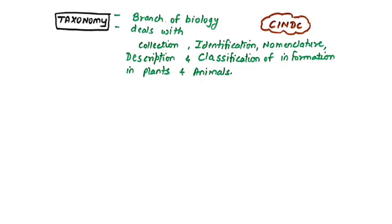Taxonomy is a branch of biology that deals with SYNDACY: if you see an unknown animal, you first Collect all possible information, then Identify it, give it a Name (nomenclature), Describe it to others, and finally Classify it. So taxonomy stands for collection, identification, nomenclature, description, and classification of plants and animals.